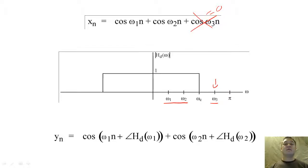But how does the phase affect the output? For an ideal low-pass filter, Y of n would equal cosine omega 1n plus cosine omega 2n.